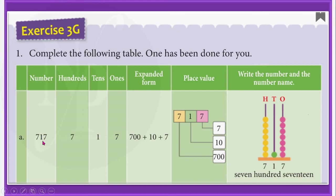Expanded form of 717 is 700 + 10 + 7. The place value of the first 7 is 700 because it is in the hundreds place. Place value of 1 is 10 since it is in the tens place. And the place value of the last 7 is 7 since it is in the ones place. Coming to the last column, we should write the number and number name represented by this abacus. Count the number of beads: 7 on hundreds rod, 1 on tens rod, and 7 on ones rod. So the number name is 717. This is an example.